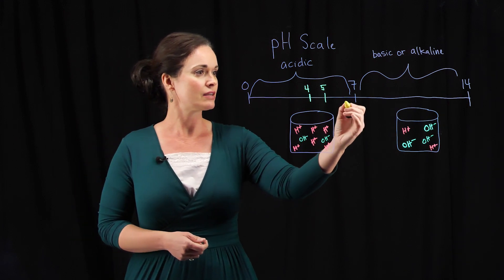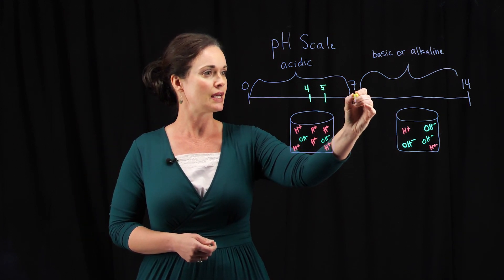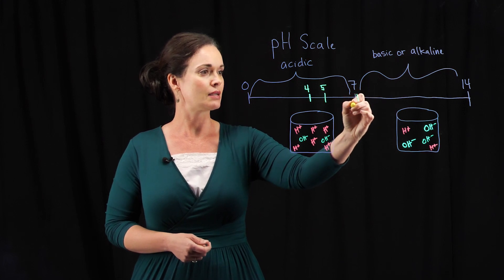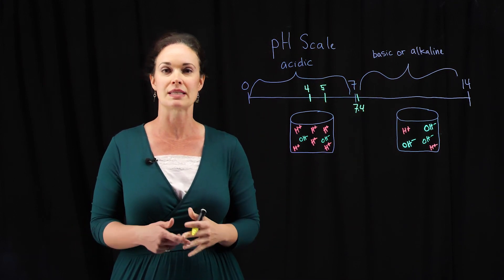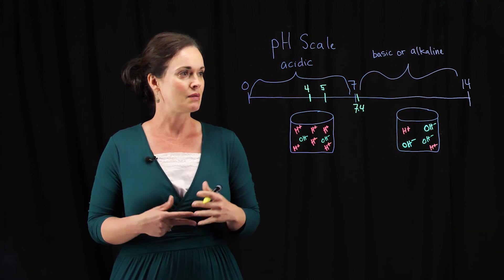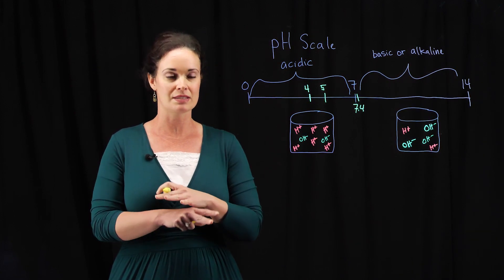On the other end of the scale, human blood sits right at about 7.4, so your blood is not neutral—it's actually slightly alkaline.